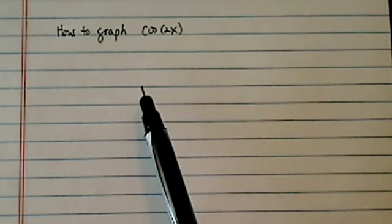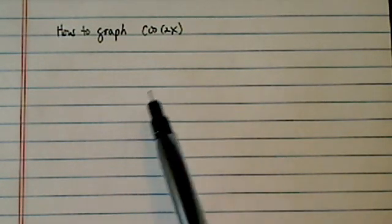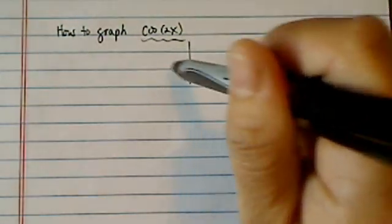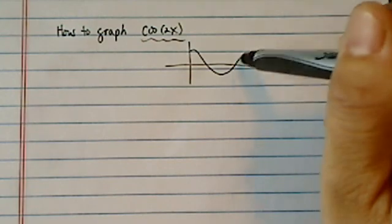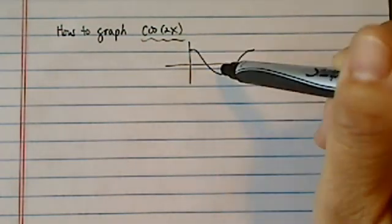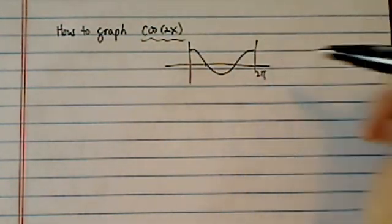Hi there, this is Dr. Pan recording from Tucson, Arizona. Today we're graphing cosine of 2x. Now cosine curve is relatively easy. It starts at 1 and it goes down to 0 and finishes at 2 pi.